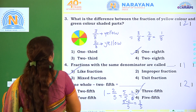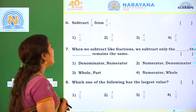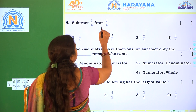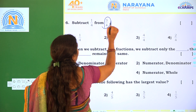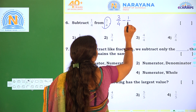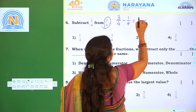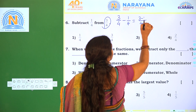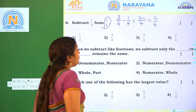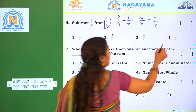Next one. Subtract 1 by 4 from 3 by 4. So that is 3 by 4 minus 1 by 4. The common denominator is 4. Subtract 3 minus 1, which is 2 by 4. The correct option is Option 4.